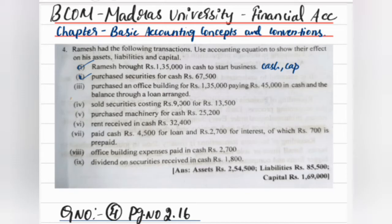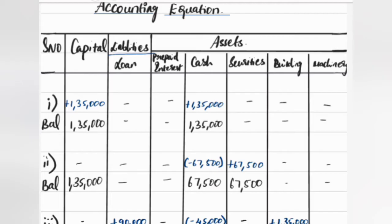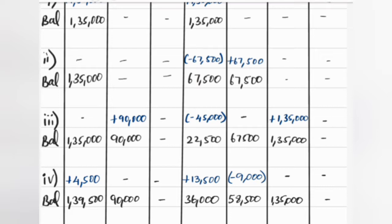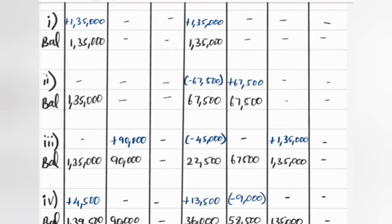Next: purchased securities for cash ₹67,500. Securities are purchased for cash — securities is an asset, so we will open that account. These two assets have to be put on account: cash value decreases from the security purchase. So securities open — we enter Roman numeral II. Cash goes minus 67,500 (in brackets), and we go plus 67,500 to securities because we are receiving the securities. We then bring forward to balance.